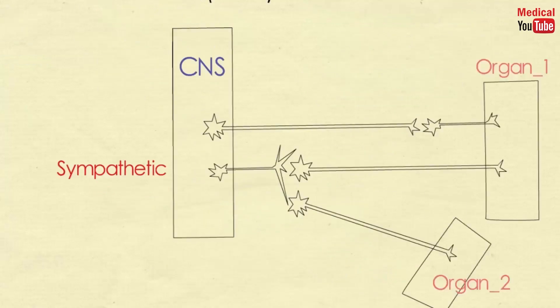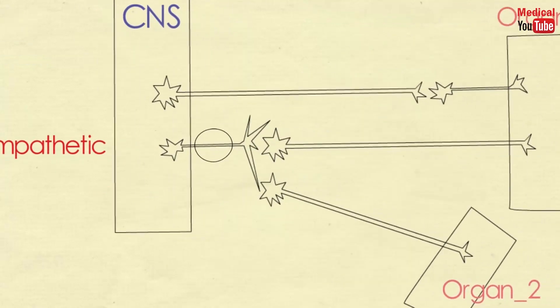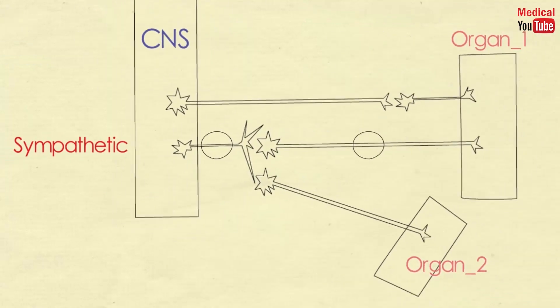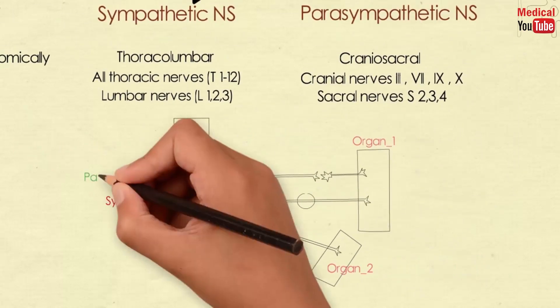The pre-ganglionic neuron in the sympathetic division is short compared to the post-ganglionic one. In most cases, the pre-ganglionic nerve endings of the sympathetic nervous system are highly branched, enabling one pre-ganglionic neuron to interact with many post-ganglionic neurons, giving a generalized effect. In the parasympathetic division, the opposite is found.